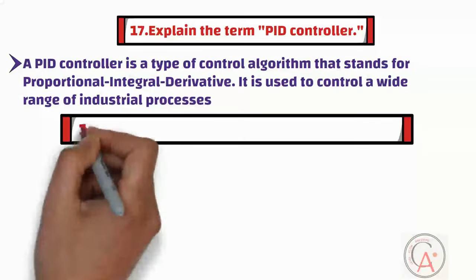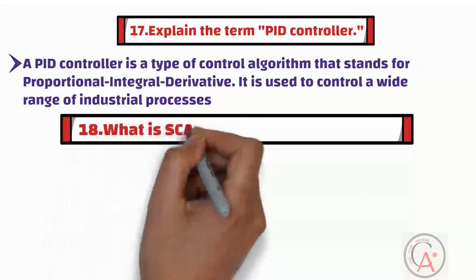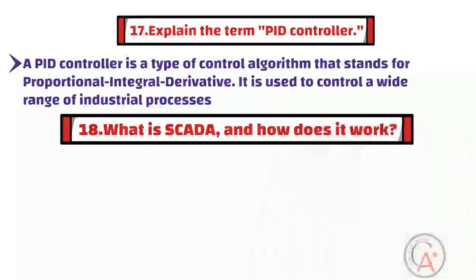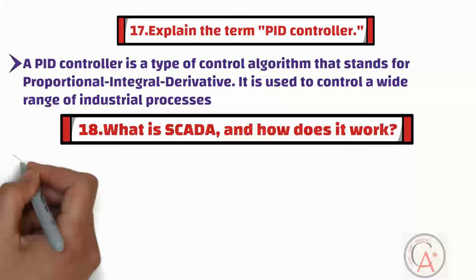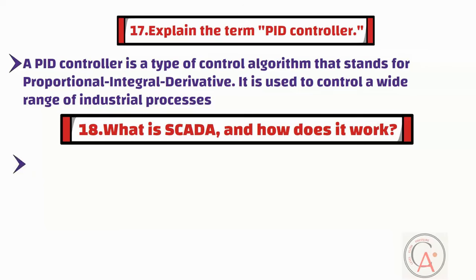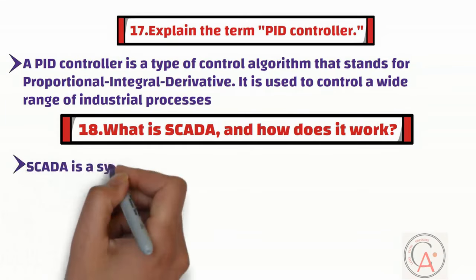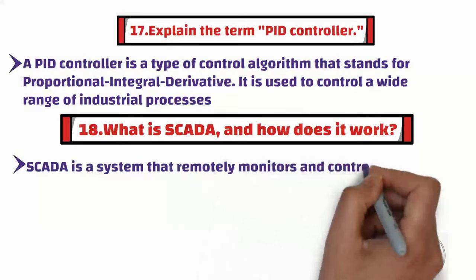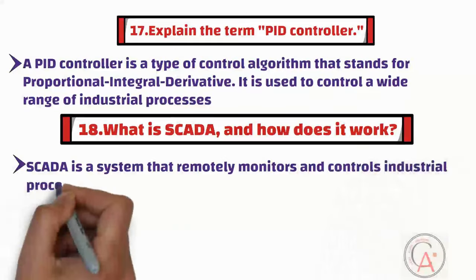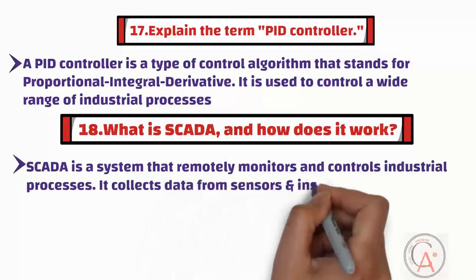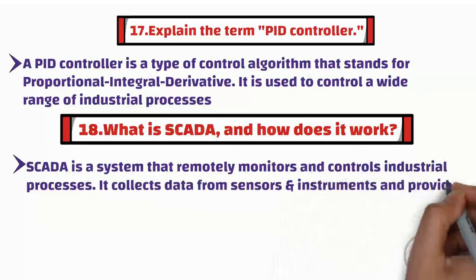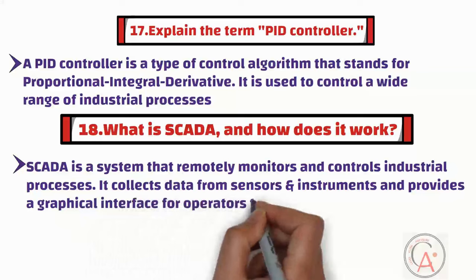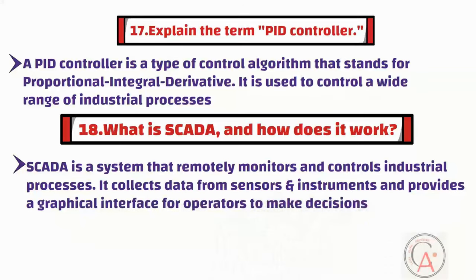The eighteenth question is: what is SCADA and how does it work? SCADA, or Supervisory Control and Data Acquisition, is a system that remotely monitors and controls industrial processes. It collects data from sensors and instruments and provides a graphical interface for operators to make decisions.